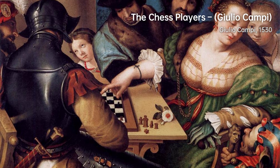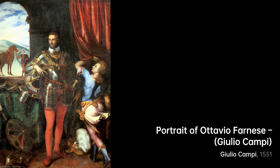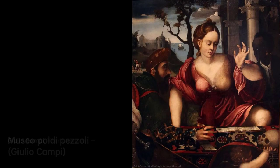Together with his brothers Vincenzo Campi and Antonio Campi, Giulio formed part of a unique artistic family that dominated the Italian Renaissance art scene. The influence of the Campi family extended beyond their individual contributions, as they helped shape the development of art in northern Italy for generations to come.